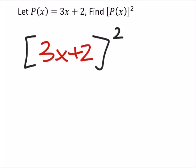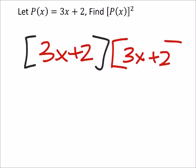And if I didn't want to square this like this, then I would just show another 3x plus 2. And now I can distribute, alright?